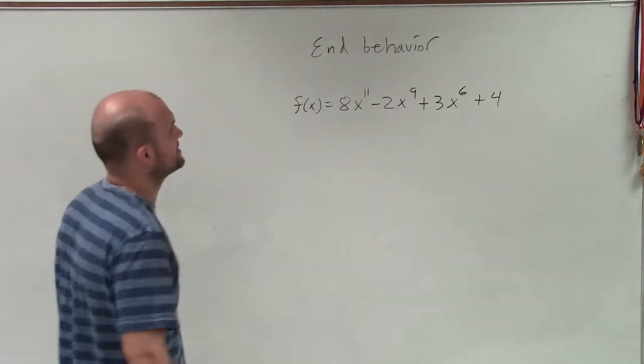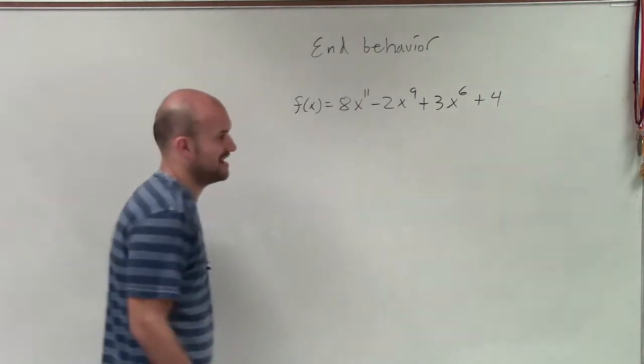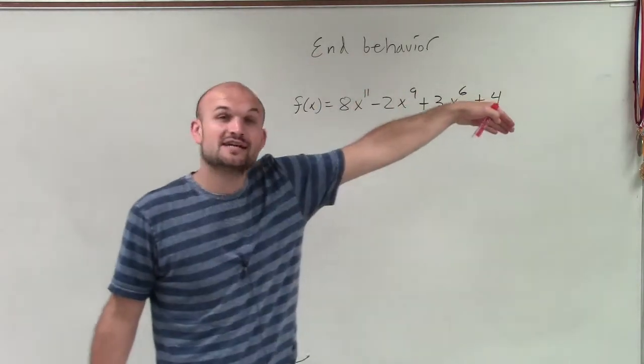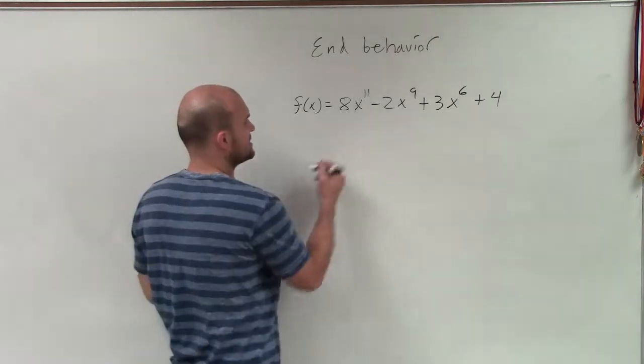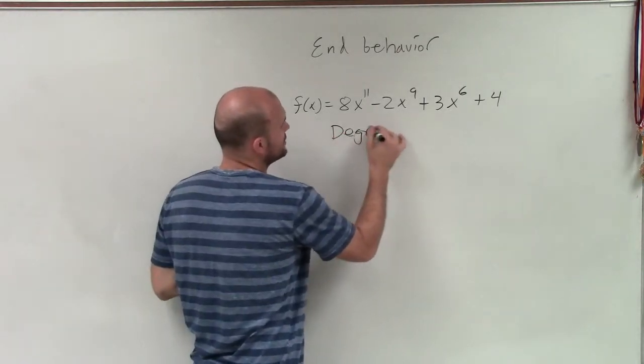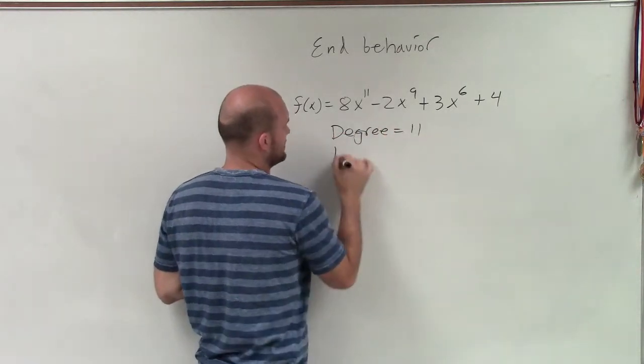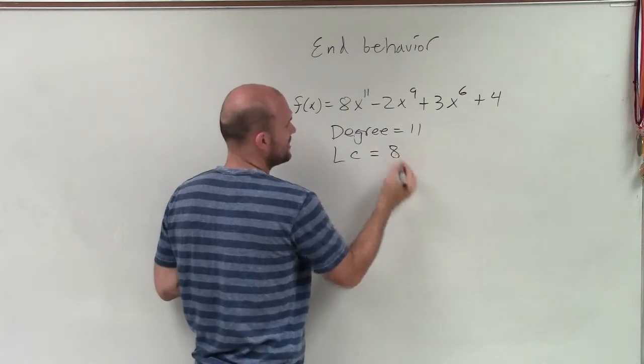So what we need to do in this equation is determine the end behavior. And to do that, we need to make sure that it first has exponents in descending order, which this is. So therefore, we can determine that the degree is equal to 11 and the leading coefficient is equal to 8.